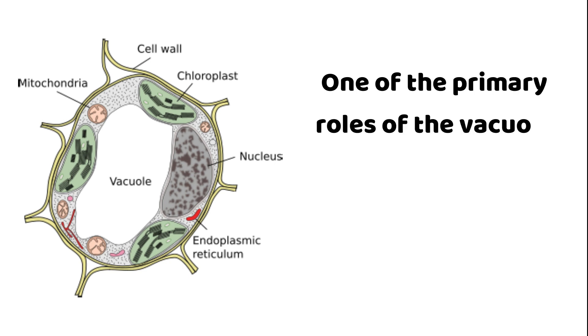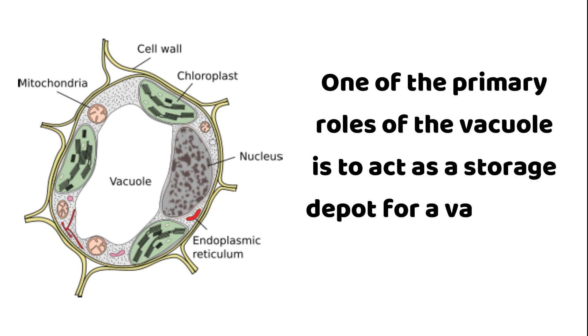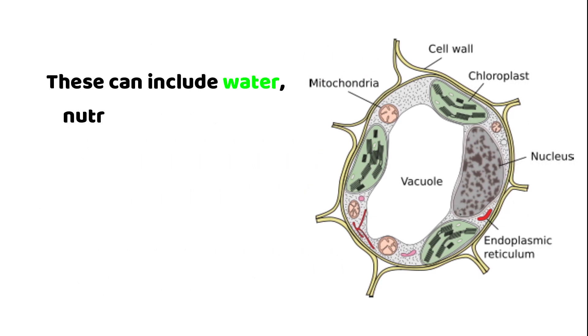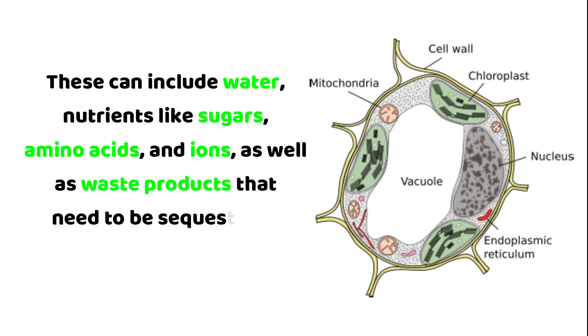Now that we have unraveled the vacuole's structure, let's talk about its function. Storage. One of the primary roles of the vacuole is to act as a storage depot for a variety of substances. These can include water, nutrients like sugars, amino acids and ions, as well as waste products that need to be sequestered away from the rest of the cell.